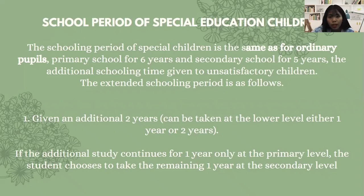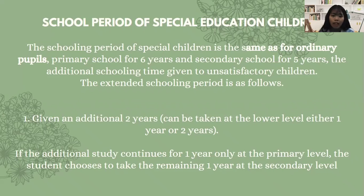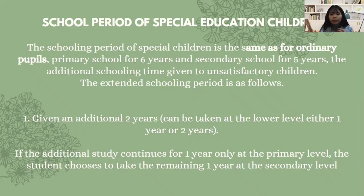The school period for special education children is the same as for ordinary pupils: primary school for six years and secondary school for five years. Additional schooling time may be given to eligible children. The extended schooling period allows an additional two years, which can be taken at the lower level, either one or two years. If the additional study continues for one year only at the primary level, the student may take the remaining one year at the secondary level.